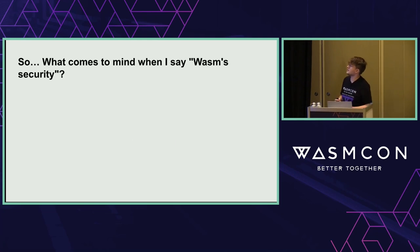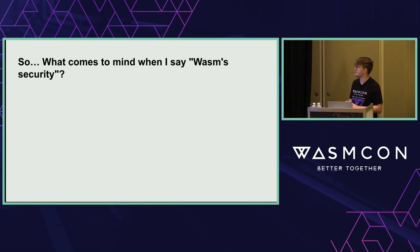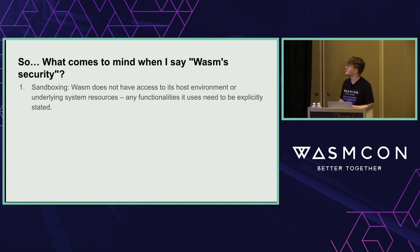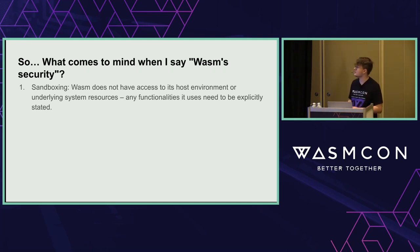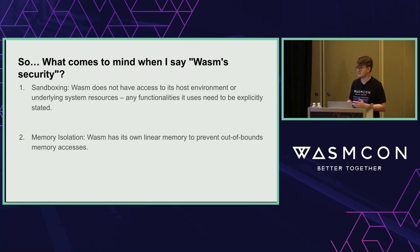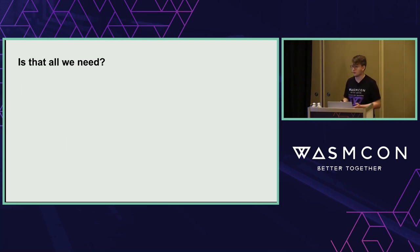Let's begin with an overview of Wasm security — binary security. What comes to mind when I say Wasm security? Two things pop up most: first, sandboxing — Wasm is completely isolated from its host environment, and any functionality it uses has to be explicitly stated. Second, memory isolation with WebAssembly's linear memory, preventing out-of-bounds accesses and accessing the host. Those are great, but is that all we need?